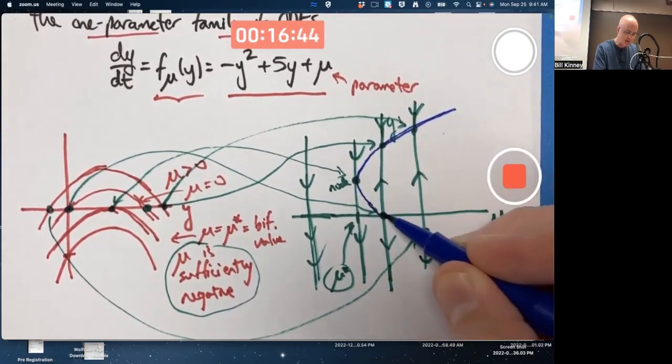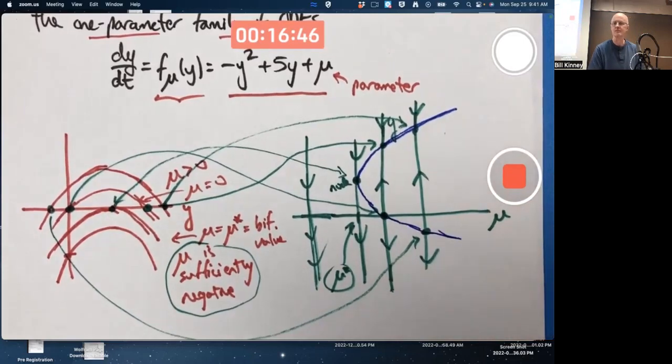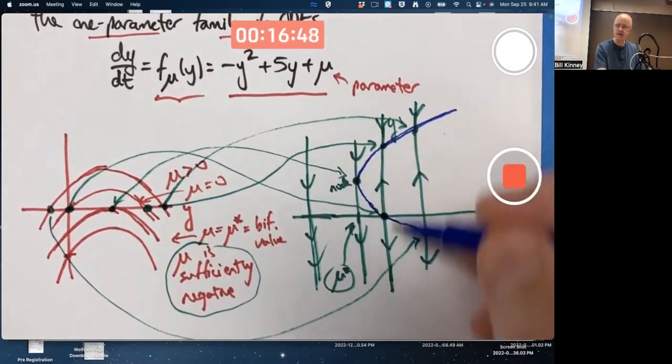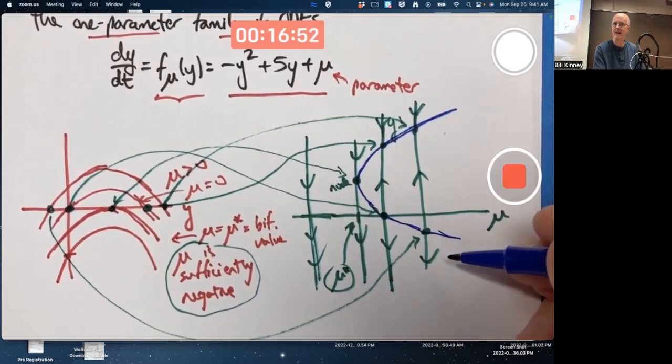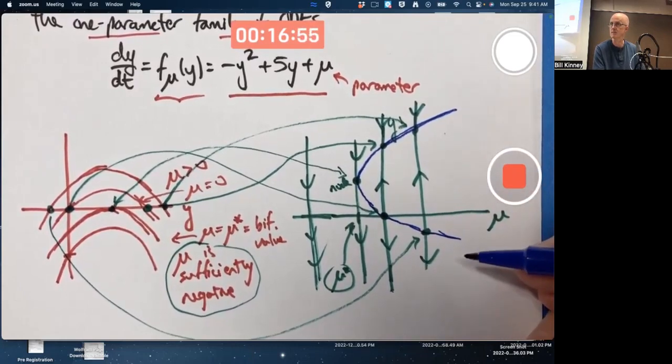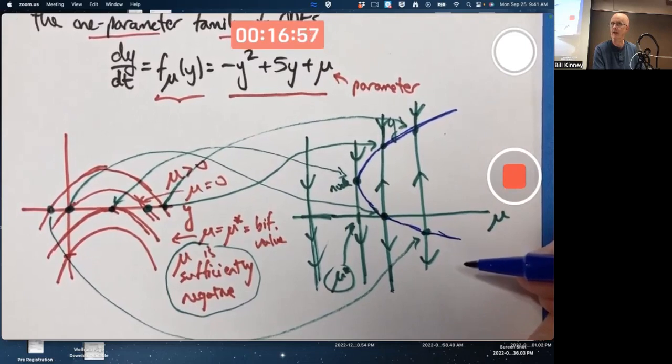Effectively saying we can draw any phase line over here at any such value mu and get something, a similar picture is what we're saying when we draw that.